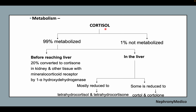Regarding metabolism: cortisol is 99 percent metabolized before reaching the liver. About 20 percent is converted to cortisone in the kidney and other tissues with the mineralocorticoid receptor by 11-beta hydroxysteroid dehydrogenase. One percent is not metabolized. In the liver, it is mostly reduced to tetrahydrocortisol and tetrahydrocortisone, and further reduced to cortolone.